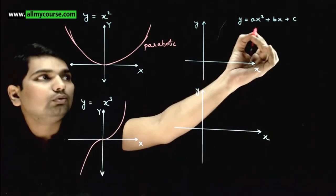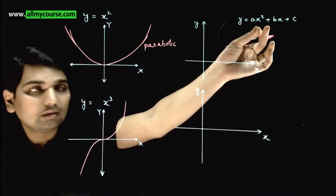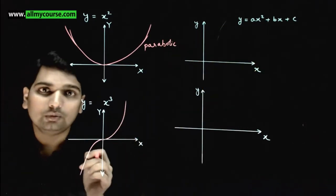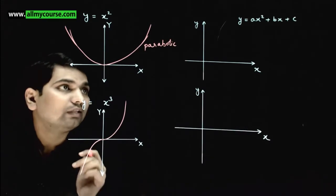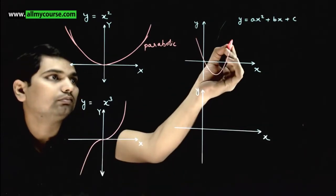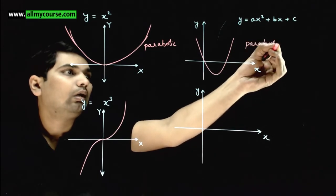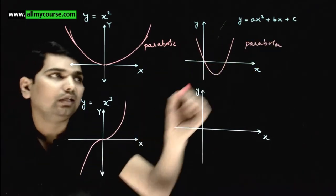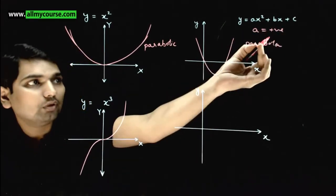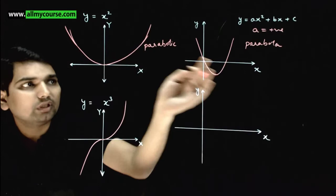If you want to draw the graph of y equals ax square plus bx plus c, which is the general equation of a quadratic equation, how will its graph look? The graph looks something like this. This is also a parabola. The parabola shape looks like this when a is positive. If a is positive, this is an upward opening parabola. Its shape will also be like this, upward opening parabola, with a shape like this.